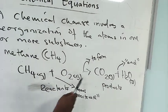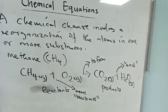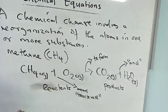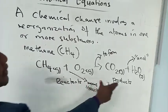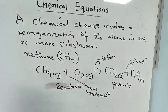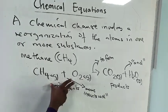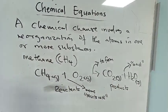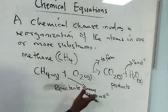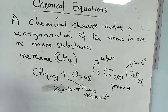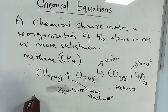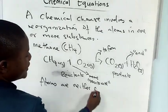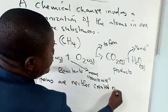So we can read the equation: methane reacts with oxygen to form carbon dioxide and water. It is also important to realize that the number of atoms on the left hand side must be equal to the number of atoms on the right hand side. Bonds have broken down and new bonds have been formed. Atoms are neither created nor destroyed.